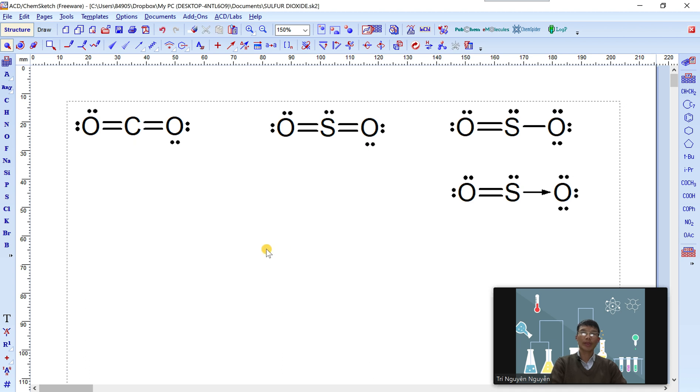Hello everyone, today I will show you how to draw a Lewis structure of sulfur dioxide molecule using ChemSketch. As you see on the screen, there's only one possible Lewis structure of carbon dioxide molecule. However, there are more than one plausible Lewis structure of sulfur dioxide molecule, so we will learn how to draw them.